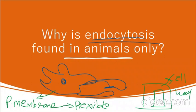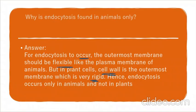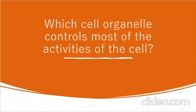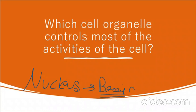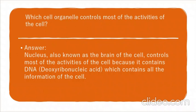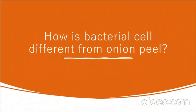Second question: Which cell organelle controls most activities of the cell? It is always the nucleus — the brain of the cell. It controls metabolism, cell respiration, DNA replication — everything. The nucleus contains DNA (full form: deoxyribonucleic acid) which holds all the genetic information of the cell.